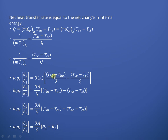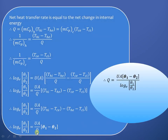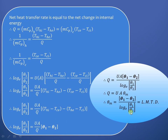Rearranging the bracketed terms: (T_hi - T_ce) - (T_he - T_ci), which is theta_1 minus theta_2. Therefore Q = U·A·(theta_1 - theta_2) / log(theta_1/theta_2). The term (theta_1 - theta_2) / log(theta_1/theta_2) is defined as the log mean temperature difference, or LMTD.